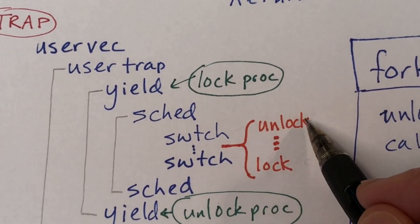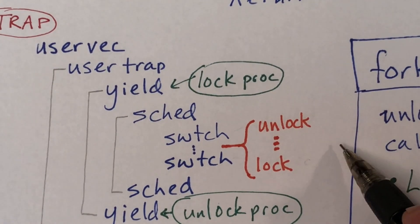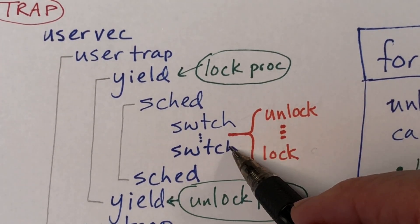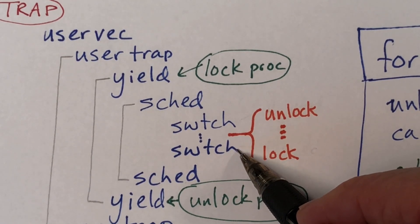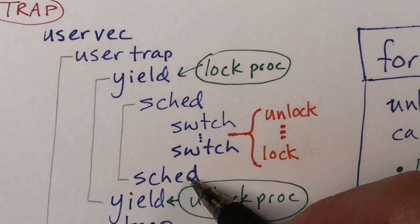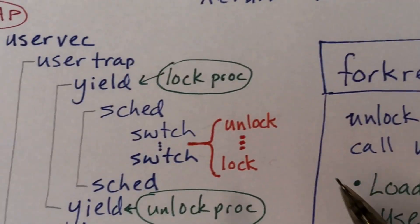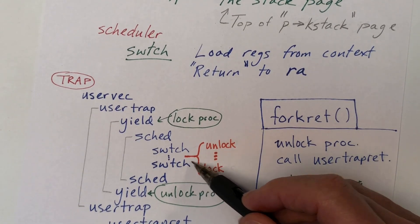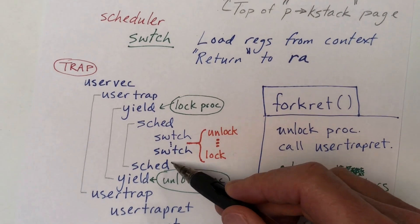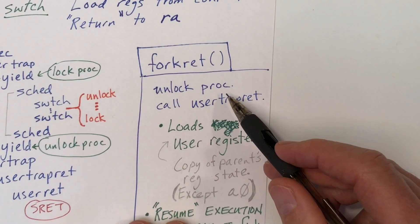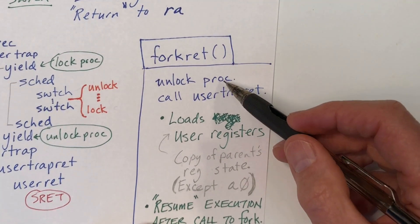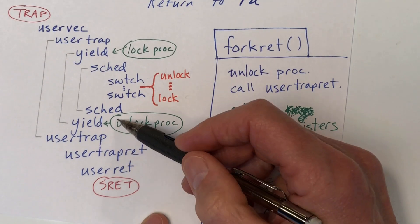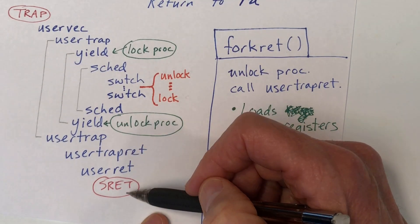Switch basically releases the lock on the process, goes off and invokes the scheduler, may execute some other processes, but eventually reacquires the lock. At that point, switch loads all the registers and returns to RA. Normally that would be a return address in the sched function, but in the case of a child process, RA has been preloaded with forkret. So when switch returns, it will be essentially jumping to forkret, which unlocks the lock on the process and calls usertrapret, completing the return process.